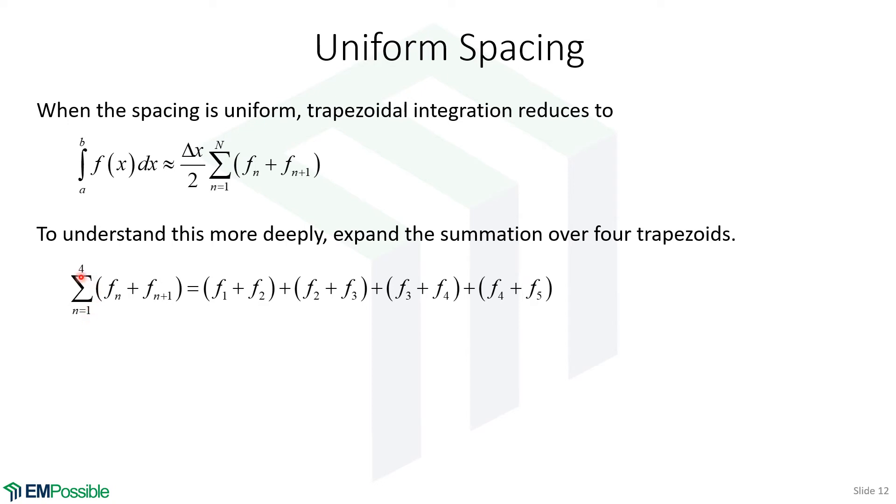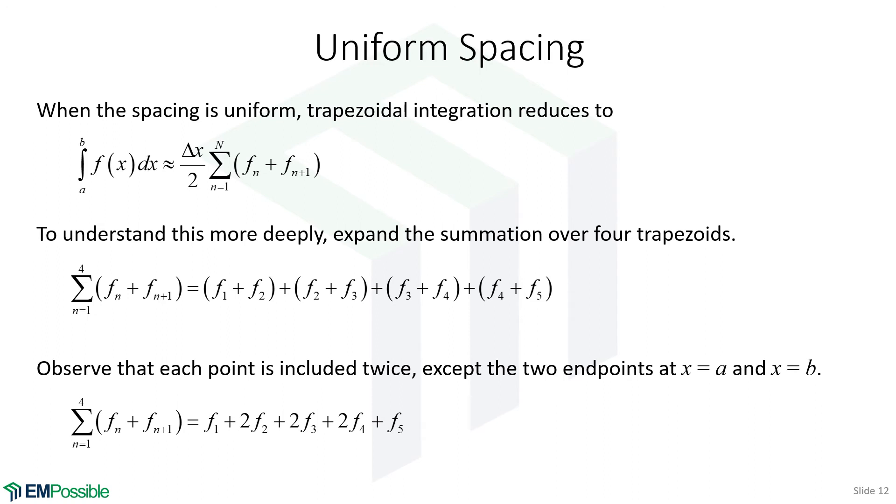So let's write this for 4 trapezoids. So our summation goes from 1 to 4. So the term in parentheses, we're going to have an F1 plus F2, and then an F2 plus an F3, an F3 plus an F4, and then finally an F4 plus an F5. We always have one more point than we have trapezoids. We can do some work on this because here's two occurrences of F2, here's two occurrences of F3, two occurrences of F4.